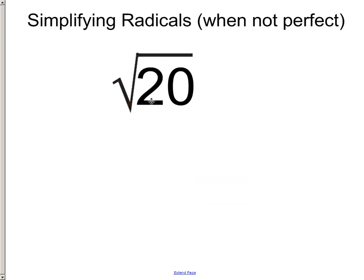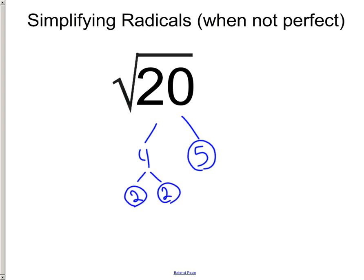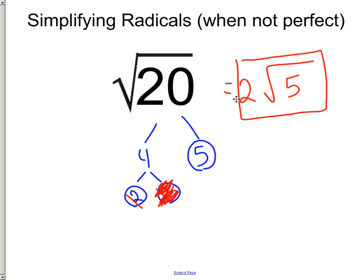Let's try radical 20. We've got numbers stuck inside that want to get out. Let's do 4 times 5. Well, 5 is a prime number, but 4 breaks down to 2 times 2. This 2 trusts that 2, so one makes it outside and the other disappears. What's left inside? Just the 5. There's only one number on the outside and only one inside, so radical 20 simplifies down to 2 radical 5.